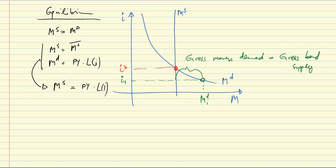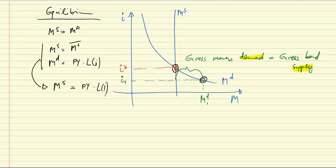Let me emphasize this: excess money demand implies excess bond supply. If there is excess bond supply, what will happen to the bond price? This question directs us to figure out how adjustment will come about — how we get from this disequilibrium to the equilibrium.